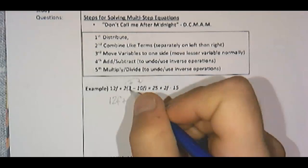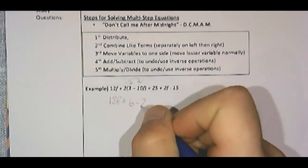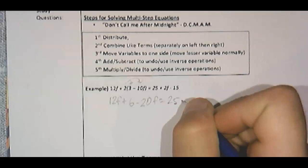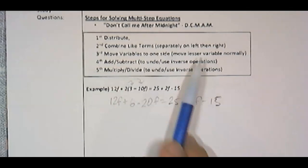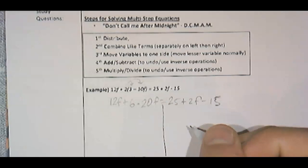I'm going to go ahead and do that. Bring down the 12f. 2 times 3 is 6. 2 times 10 is 20. So it will be a minus 20f. On this side, I'm just going to bring everything down for now. That way I can do these one step at a time.